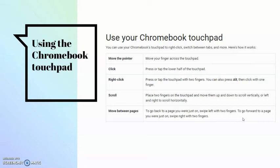The Chromebook touchpad is very sensitive and can do many different things. Moving one finger around the touchpad moves the pointer. Pressing with one finger on the lower half of the touchpad serves as a left click, which lets you select anything. For a right click, press and tap the touchpad with two fingers with a little bit of space between them. To scroll, place your fingers on the touchpad without pressing down and move them up and down or left and right.